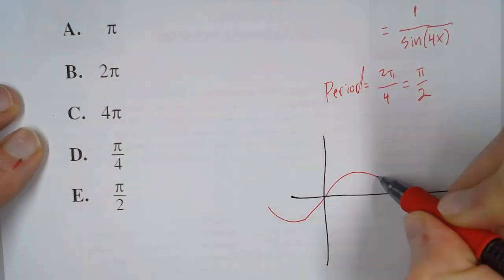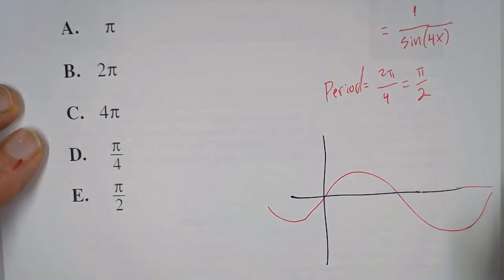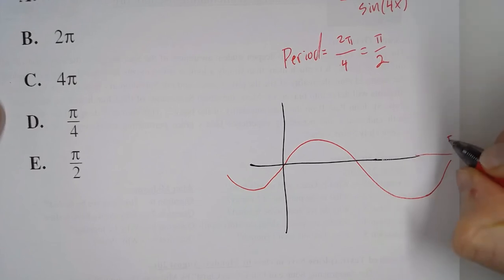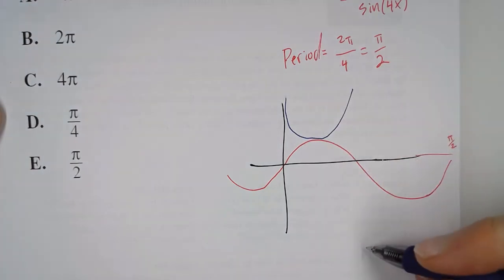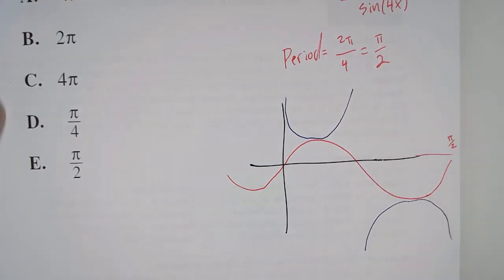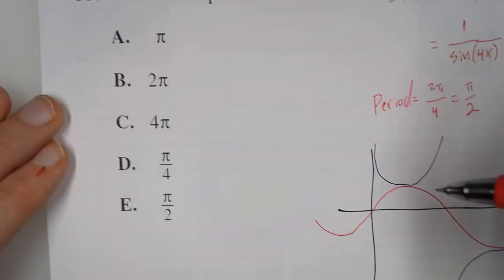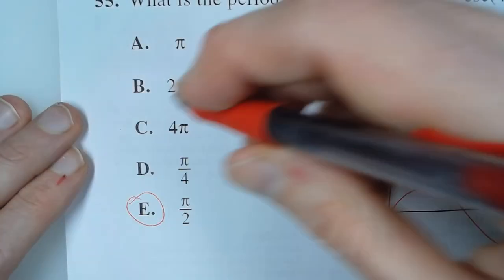So, that means, however long it takes sine to complete a cycle, in this case it's π/2, cosecant will take the same amount of time. Because cosecant is going to look like that. So, for 55, our answer is E.